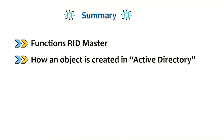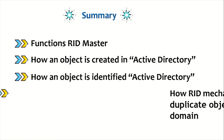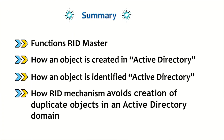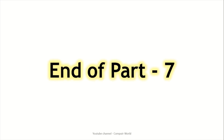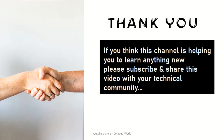Let's summarize what we have covered. We have understood the functions of RID Master, how an object is created in Active Directory, how an object is identified, and how the RID mechanism avoids creation of duplicate objects. This was the end of part 7. In part 8, we'll look at the next FSMO role — Infrastructure Master. Thank you for joining. If this channel is helping you learn, please subscribe and share with your technical community. Have a great day.